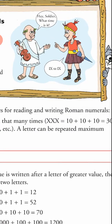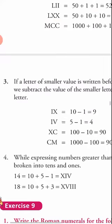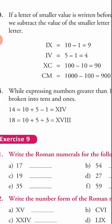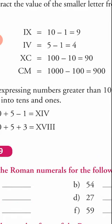Now you can read the soldier's answer — he replied '9 to 9.' In our next example, IV: smaller value before greater, so 5 minus 1 equals 4. Similarly, XC is 100 minus 10, which equals 90, and CM is 1000 minus 100, which equals 900.